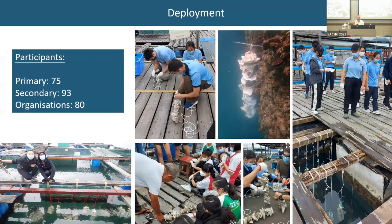The next step is going into the field for deployment. We mostly go to fish rafts because it's easier and safer than going to sea walls. The kids pull a rope and hang the shells into the water. We engaged 75 primary students, 93 secondary students, and 80 members of other organizations in this step. What was very interesting was that old fishermen came and started teaching the children how to tie knots. The children really enjoyed this interaction with the elders. It was quite special.